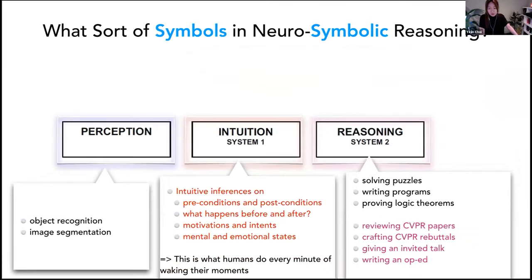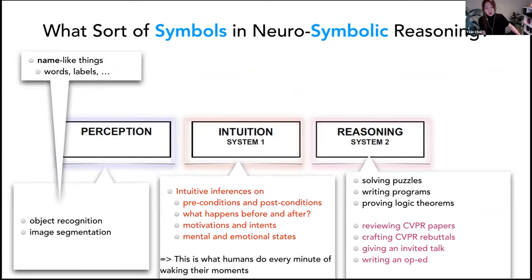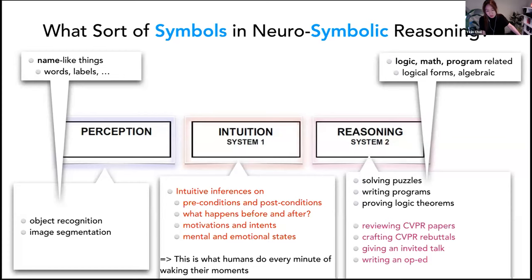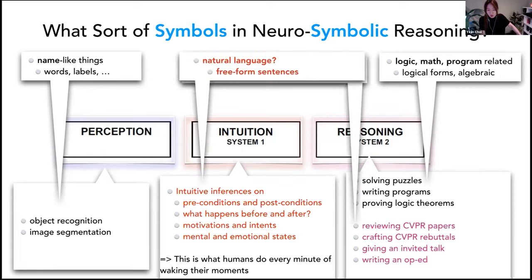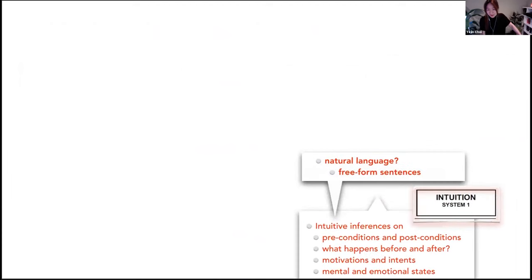To make things more concrete, what sort of symbols we need has a lot to do with what sort of task we want to solve. We don't yet have a general-purpose, one-fits-all system. So for solving puzzles and writing programs, we need logic, math, and program-related constructs. But for more advanced reasoning tasks or even intuitive inferences, I'm going to argue that natural language is the way to go. That's a big statement to make.